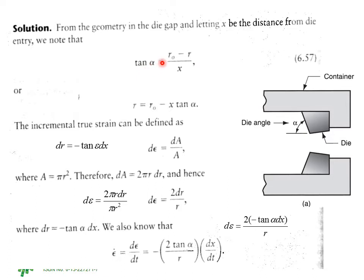So tan(α) = (R₀ - R) / X, and from there R = R₀ - X·tan(α). Because we will need differentials, you find dR from here, which comes out to be -tan(α)·dX.